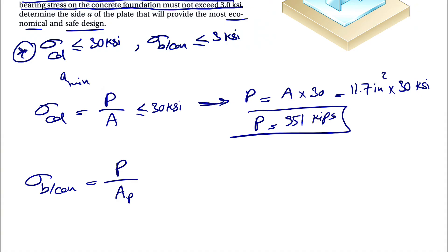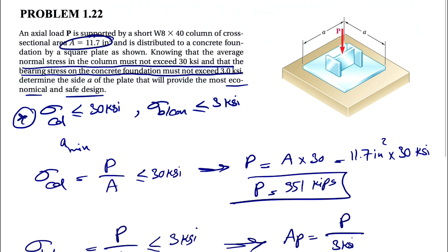We have the same P here and this cannot exceed 3 KSI. To find the area of the plate, we have P divided by 3 KSI, which is the maximum bearing stress in the foundation. This gives us the area of the plate.